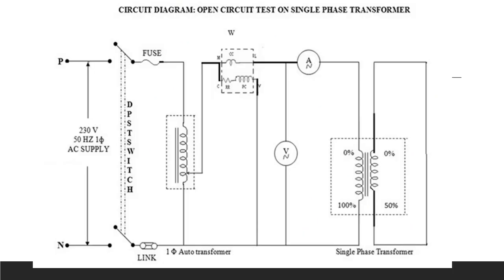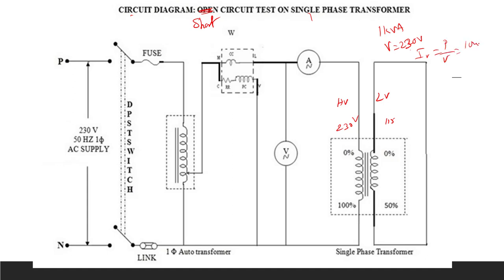This is the circuit diagram for the short circuit test on a single-phase transformer. The low voltage side has been short-circuited and the high voltage side is given the power supply. For a 1 kVA, 230/150 volt transformer, the rated current on the high voltage side will be IR = P/V = 1000/230 = 4.3 amps. So you have to set the rated current to 4.3 amps.